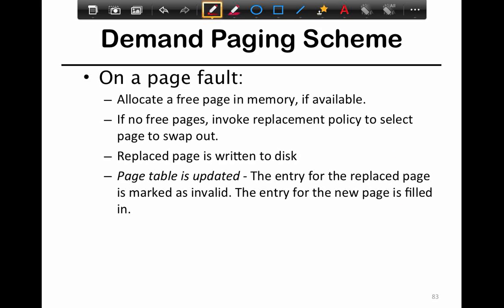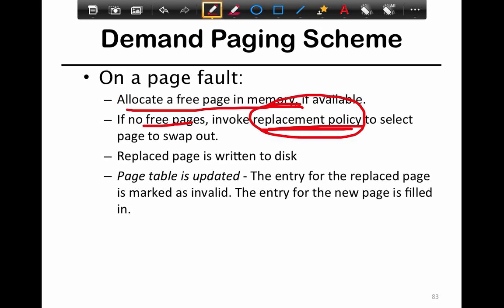On a page fault, you first allocate a free page in memory if one is available. If no free pages are available, you invoke the replacement policy. It's a three-step process: first, you kick out the old replacement candidate page to disk; then you update the page table entry, marking the replaced page as invalid; and finally you copy the new page in and update the page table entry for the new page.